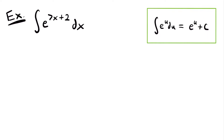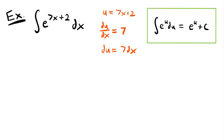In order to use this rule, we are going to set our exponent equal to u. So we'll have u is equal to 7x plus 2. Taking the derivative, du dx is equal to 7 — the derivative of 7x is just 7 because the derivative of x to the power of 1 is just the coefficient, and the derivative of 2 is 0. So if we solve for du by multiplying both sides by dx, we will have that du is equal to 7 dx.